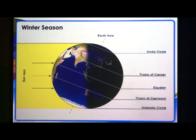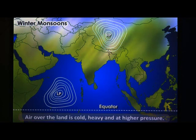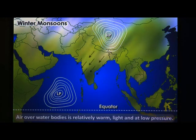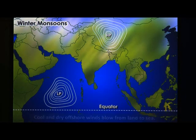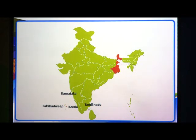Winter monsoons. When the sun is over the Tropic of Capricorn, winter is experienced in Central Asia. As a result, the air above the land is cold and creates a high pressure zone. However, the surrounding oceans and seas are rather warm and thus have low pressure over them. Therefore, the air begins to blow from land to sea. The dry cold winds offshore do not bring rainfall. This is winter monsoon. In India, winter monsoon is experienced in the regions like Tamil Nadu, Karnataka, Kerala, Lakshadweep and some parts of West Bengal, Odisha and Andhra Pradesh.